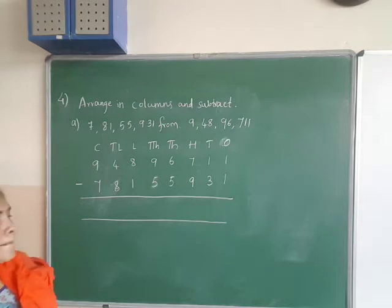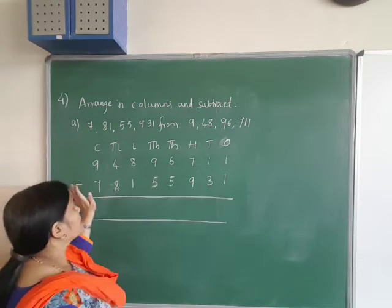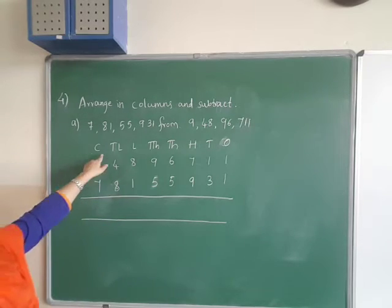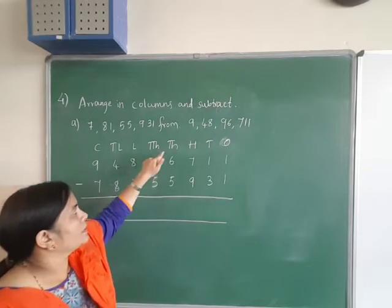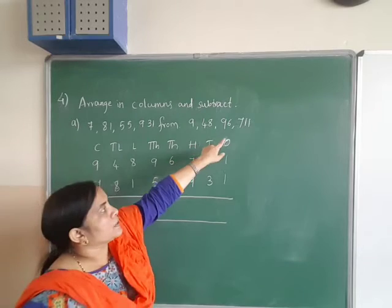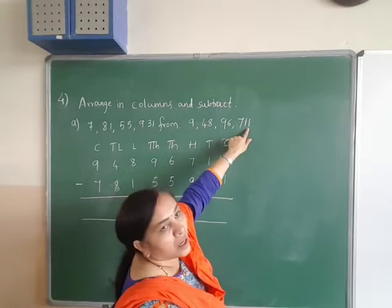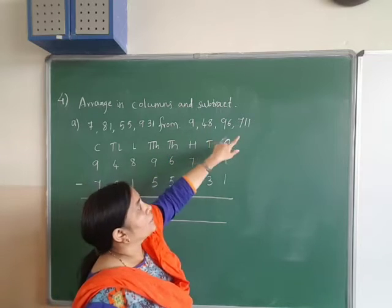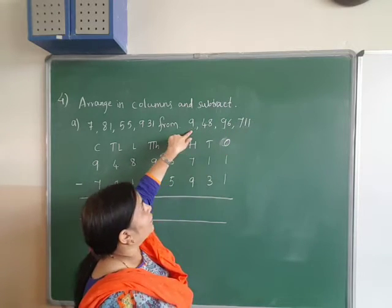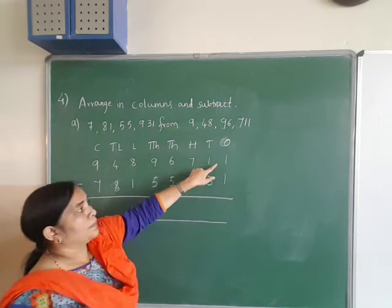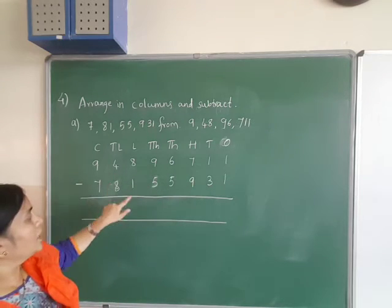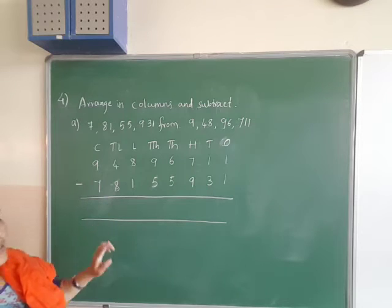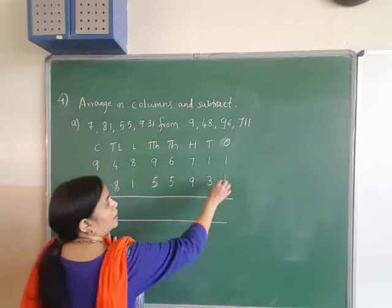This is clear. Now it is easy to subtract. First step: write the place value chart — ones, tens, hundreds, thousands. According to the place value, start with the ones column and work right to left. Place value chart done — write the numbers column-wise, then subtract.